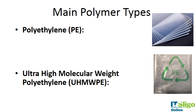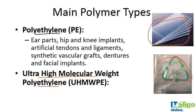The first type of polymers are polyethylenes. We see them everywhere — plastic bags, plastic sheeting — and we may be familiar with the polyethylene recycling sign. In particular, ultra high molecular weight polyethylene is used in medical devices. Polyethylene itself is used for different implants, artificial tendons and ligaments, vascular grafts, dentures, and facial implants.